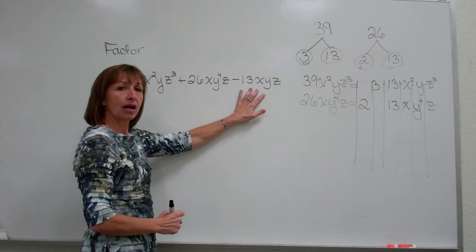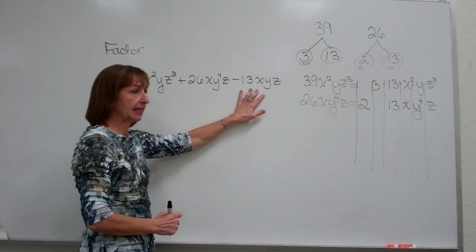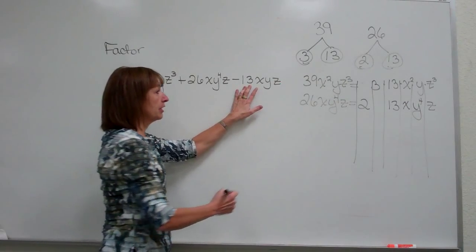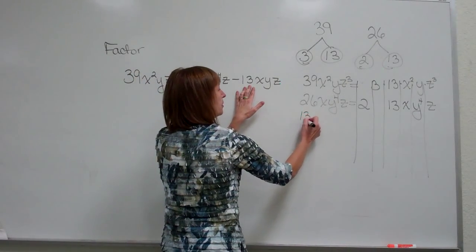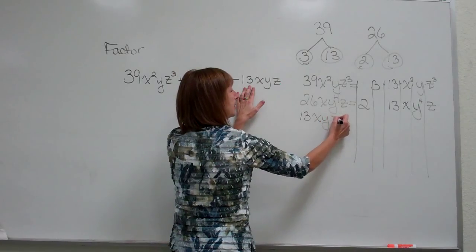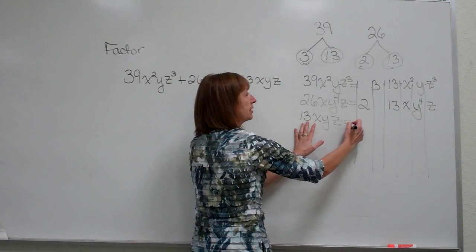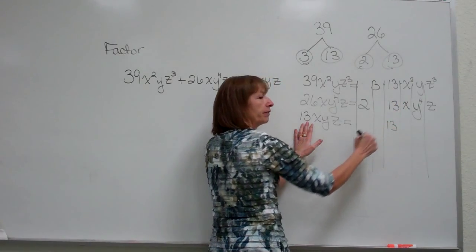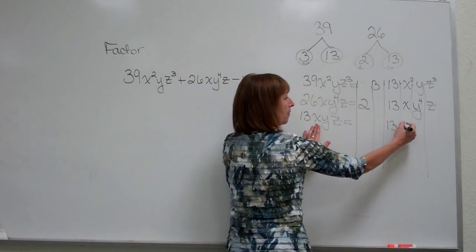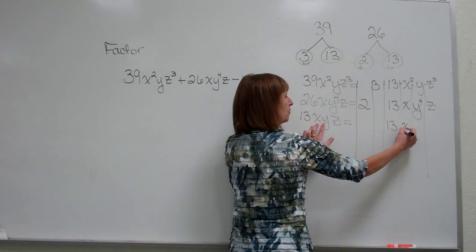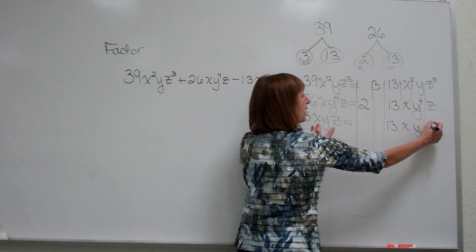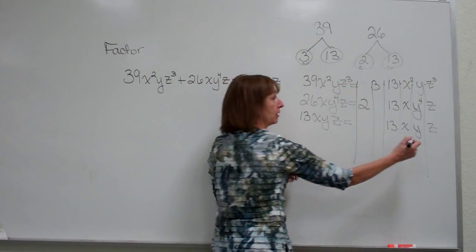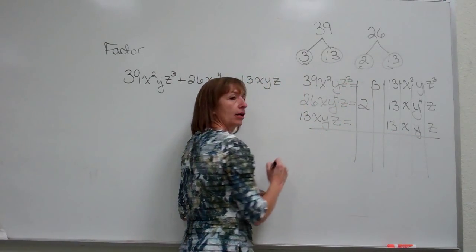Okay, let's come to our third term, our negative 13xyz. 13 is already prime, so it doesn't factor any further. We'll write our 13xyz. 13 as a numerical factor matches up with the 13 that we had in our previous two terms. With your variable factors, match the base of x there, y, and z. Now once I've done all the terms in the polynomial, I'm just going to draw a horizontal line.